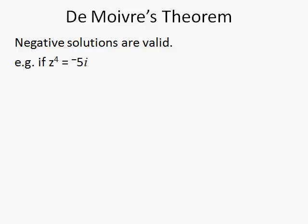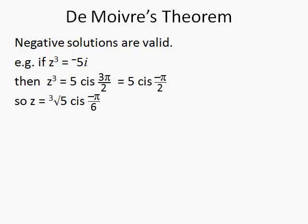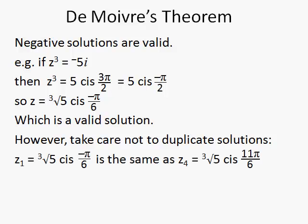Negative solutions are valid. That is, if z to the 4 is minus 5i and we convert it to polar form, we might write it as 5 cis 3π over 2, or we might write it as 5 cis negative π over 2 going the other way. Applying De Moivre's theorem gives the cube root of 5, cis minus π over 6, because that's π over 2 divided by 3, which is a valid solution. Just be a little careful, because as we find the further solutions by adding 2π over n three times, the fourth one will equal the cube root of 5 cis 11π over 6, which is the same as minus π over 6 because it's 2π more. Both solutions are valid, but only list one of them. You need three solutions for a cube root and four for a fourth root.